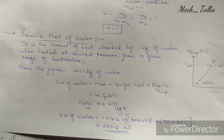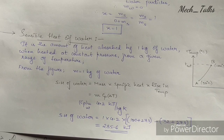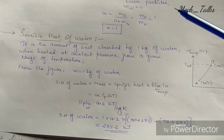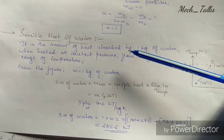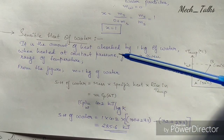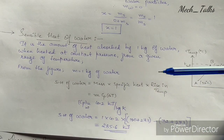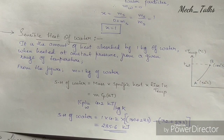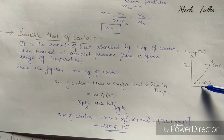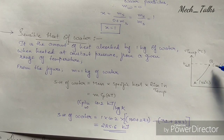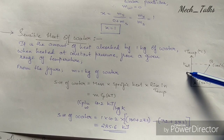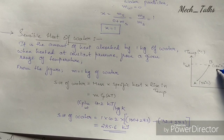The next important topic is sensible heat. It is defined as the amount of heat absorbed by one kilogram of water when heated at constant pressure over a given range of temperature. In the last video, I showed the graph of temperature versus heat, where water was heated from room temperature at 32°C up to 100°C, which is the saturation temperature or boiling point of water.